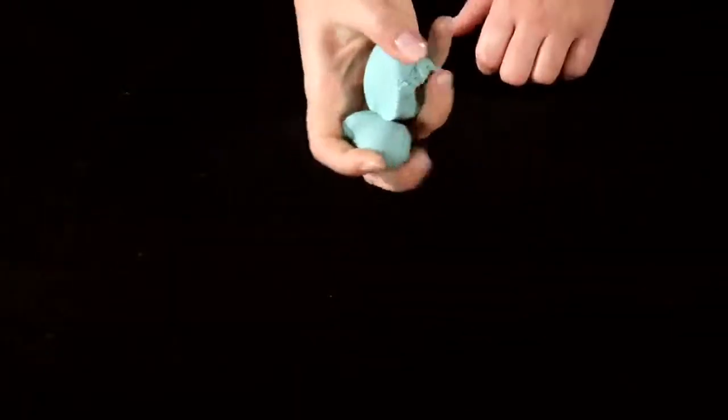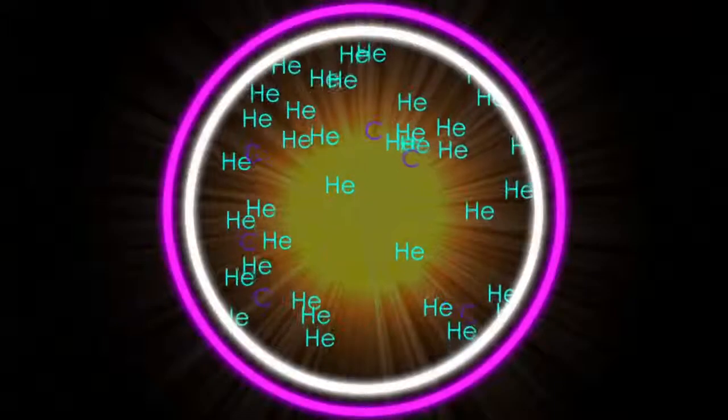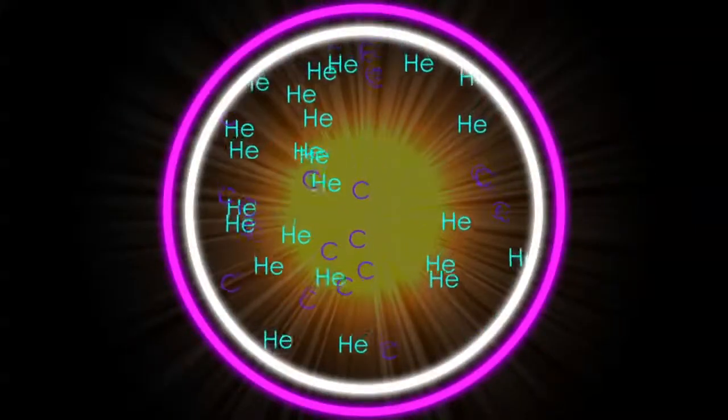So we squish together three blue helium atoms to make one purple carbon atom. In the Sun, this is where things will end once the helium runs low.